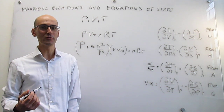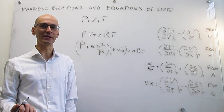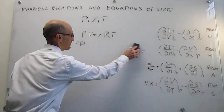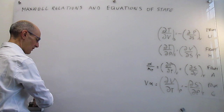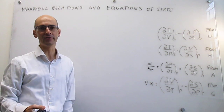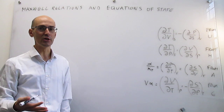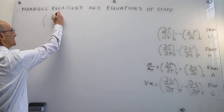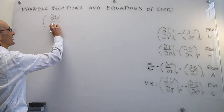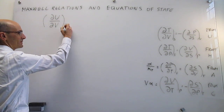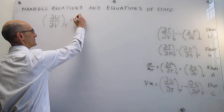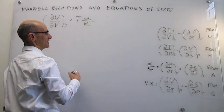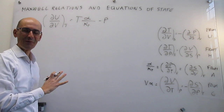We're going to begin by showing how you can obtain an equation for pressure using material we have seen in prior videos. We're going to recover the partial derivative of the internal energy with respect to volume at constant temperature, which we derived in our previous video. That partial derivative looks like this: (∂U/∂V)_T = Tα/κ_T − P, where α is the expansion coefficient and κ_T is the isothermal compressibility.